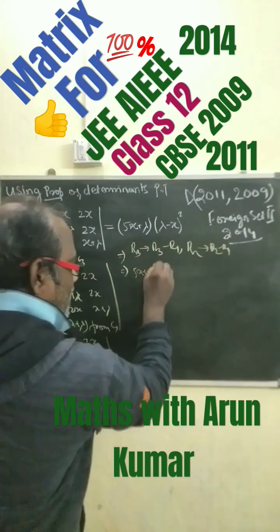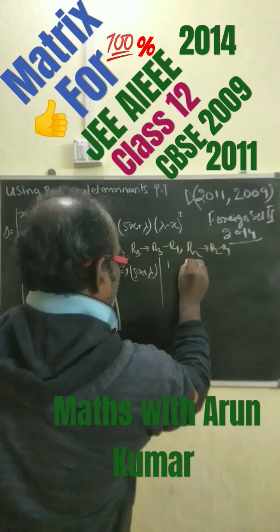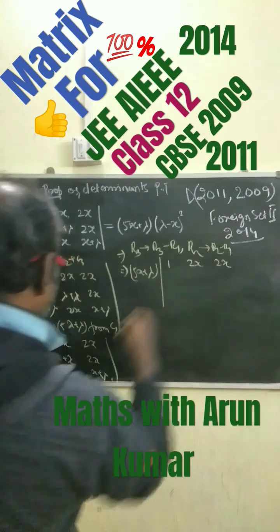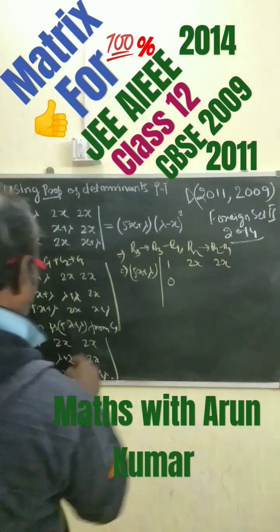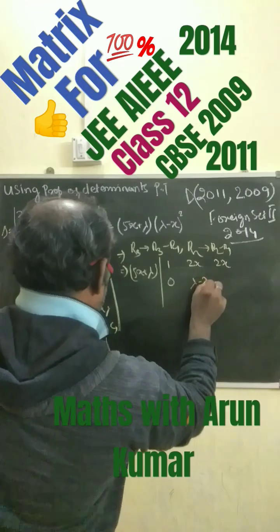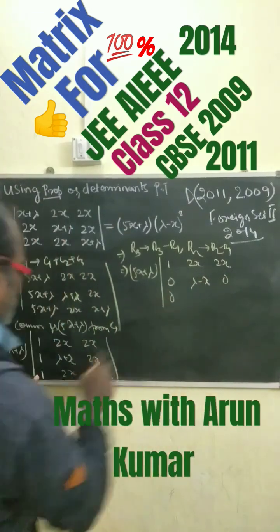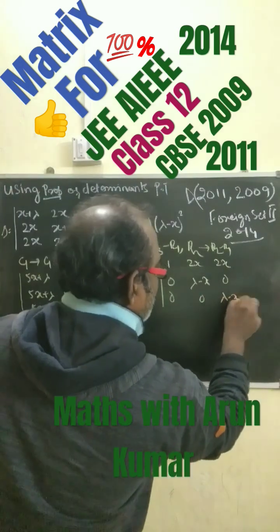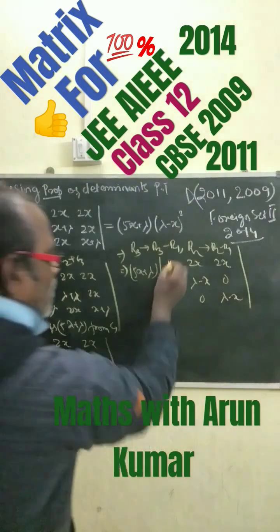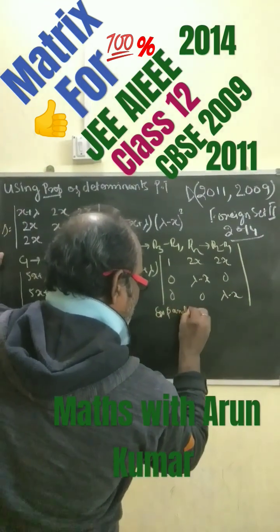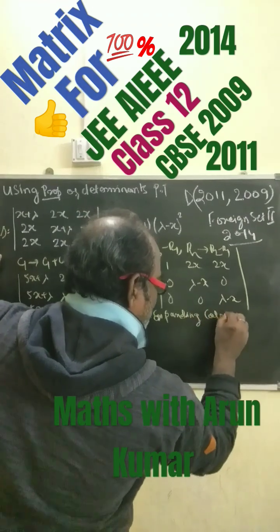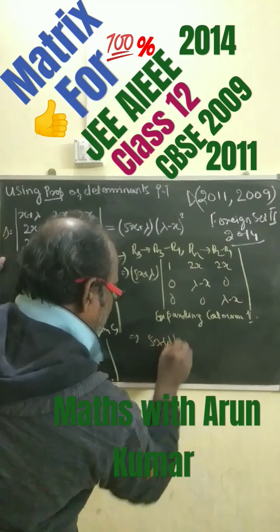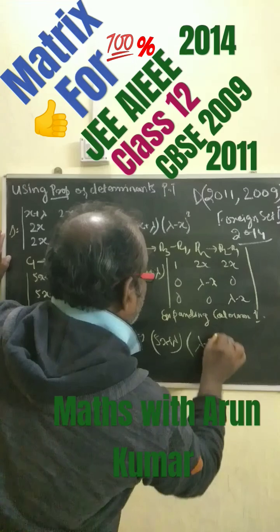After the row operations, we get 5x plus lambda as common, then 1, 2x, 2x in the first row. R2 minus R1 gives 0, lambda minus x, 0. Expanding along column 1, we get 5x plus lambda into lambda minus x.